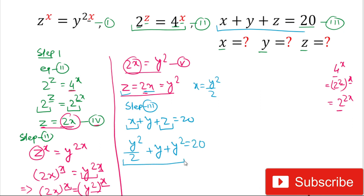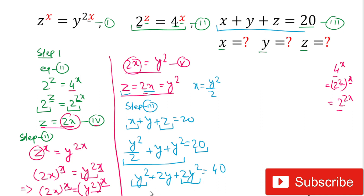To simplify, we multiply both sides by 2. The left-hand side becomes y squared plus 2y plus 2y squared, and the right-hand side becomes 40. Combining like terms gives 3y² plus 2y minus 40 equals 0. This is now in the form of a quadratic equation.